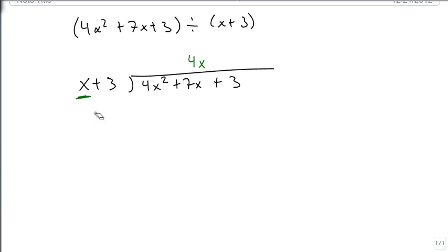And so the 4x then gets multiplied to get 4x squared plus 12x. And when we do long division with numbers, we then subtract. And to subtract, we change the sign. So 4x squared minus 4x squared is 0x squared, which we can ignore. 7x minus 12x is minus 5x. And we bring down the plus 3.